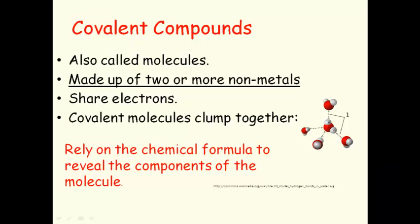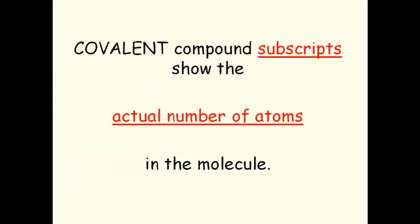Covalent compounds rely on the chemical formula to reveal the components of the molecule. Covalent compound subscripts show the actual number of atoms in the molecule. This is unlike ionic compounds where it simply showed the ratio.